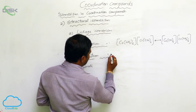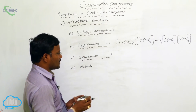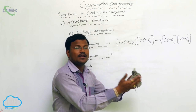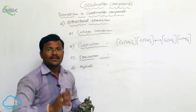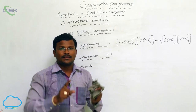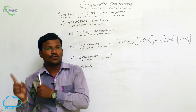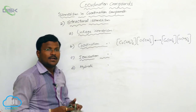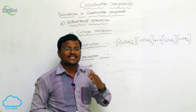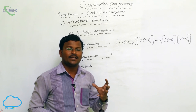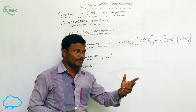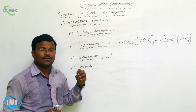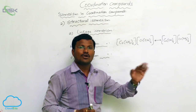The third type is ionization isomerism. Generally, counter ions are present outside the coordination sphere and satisfy primary valency, while negative species inside the coordination sphere satisfy the coordination number or secondary valency. Sometimes, ions satisfying secondary valency can interchange with those satisfying primary valency — meaning primary valent ions enter the coordination sphere and the ions previously inside are eliminated.